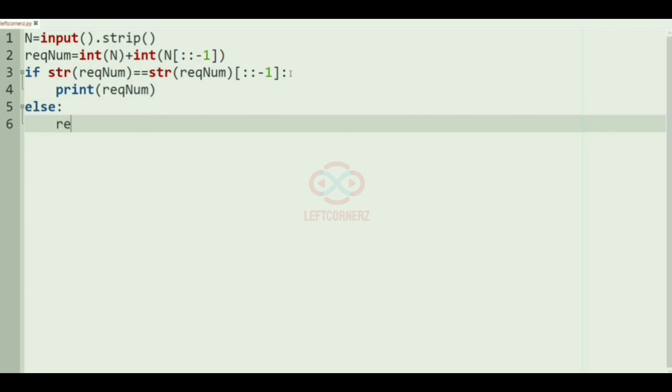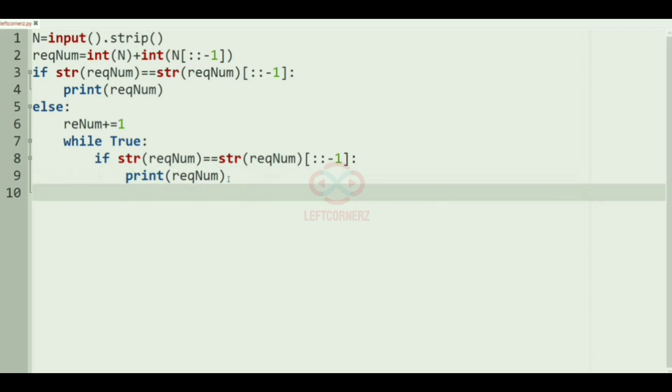In the else part, we are going to find the next palindromic integer. The required num will be incremented by 1, and then while true, if the str of the required num is equal to equal to, that is the same condition we are going to check whether it is a palindrome, then we will print the required num and use break. After this, again the required num will be incremented by 1.